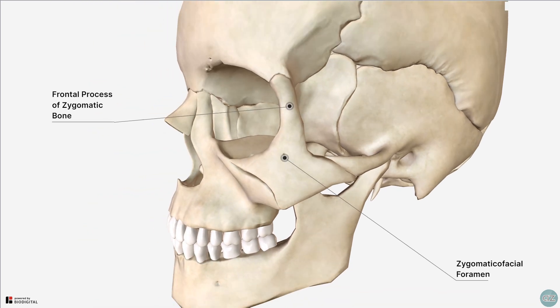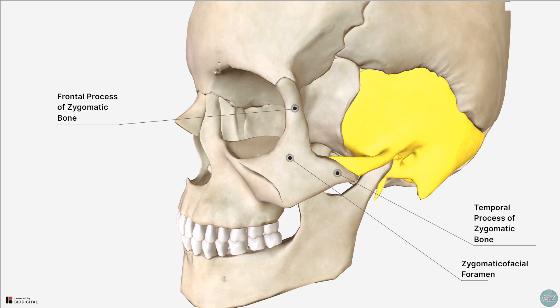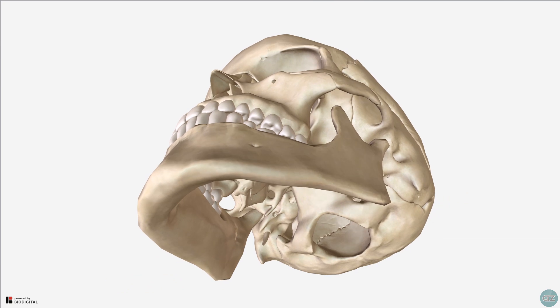Superiorly, the zygomatic bone articulates with the frontal bone via the frontal process of the zygomatic bone at the frontozygomatic suture. Posteriorly, it articulates with the temporal bone via the temporal process of the zygomatic bone at the zygomaticotemporal suture. These two components — the zygomatic process of the temporal bone and the temporal process of the zygomatic bone — form the zygomatic arch.